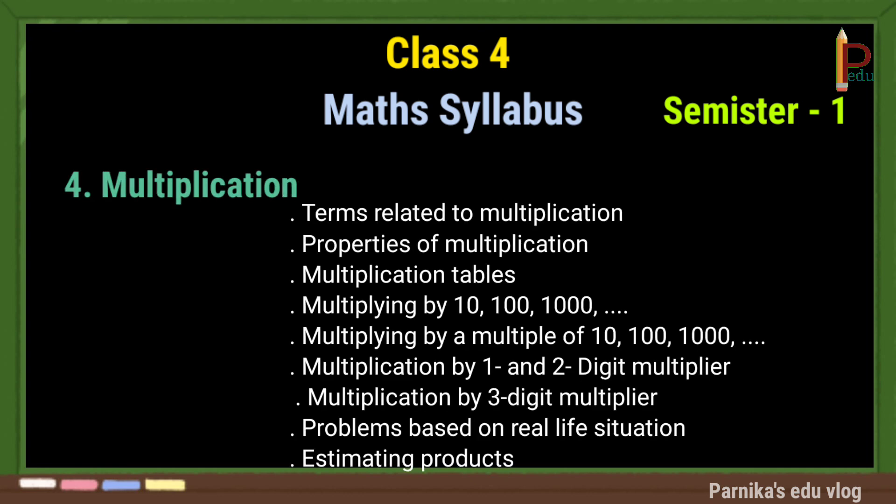The fourth chapter is Multiplication. This chapter is an extension of the third class multiplication chapter. In this chapter, we will learn multiplication by one digit, two digit, and three digit multipliers. Some word problems will also be solved here.